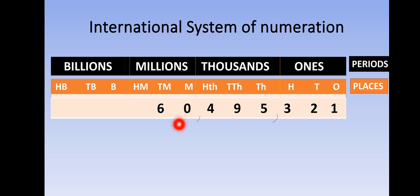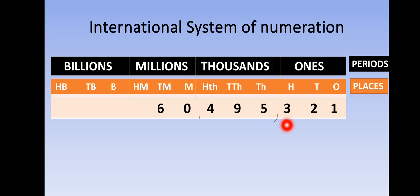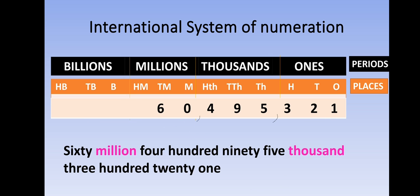I will read this as 60 — this comes in the Millions period. Then 495 — it comes in the Thousands period. And 321 — it is in the Ones period. So I will write the number as 60,495,321.